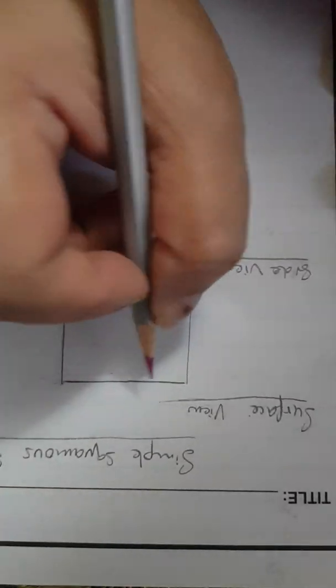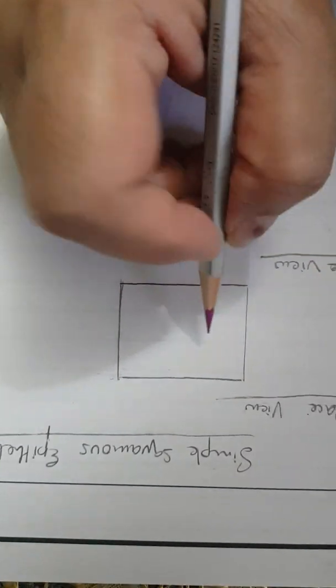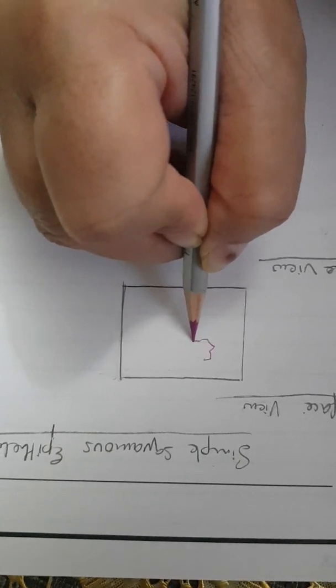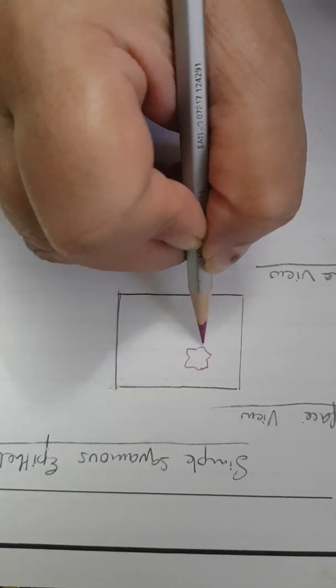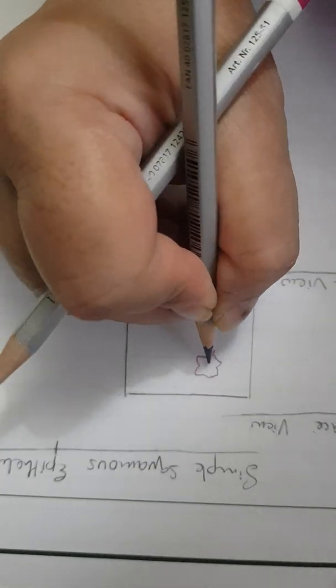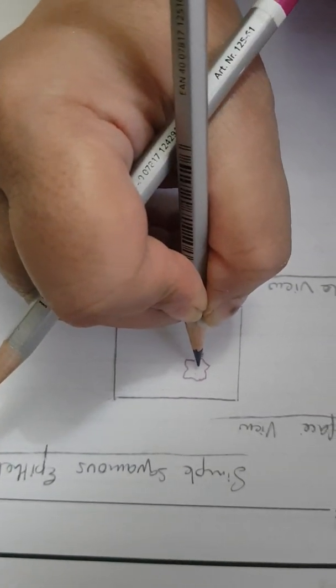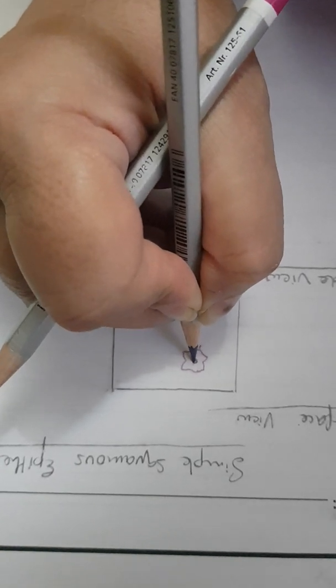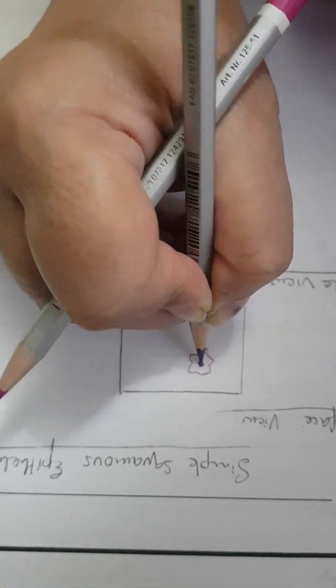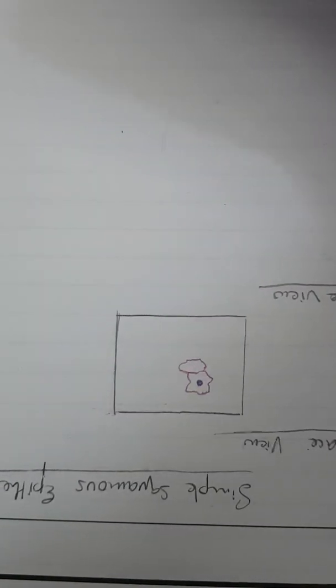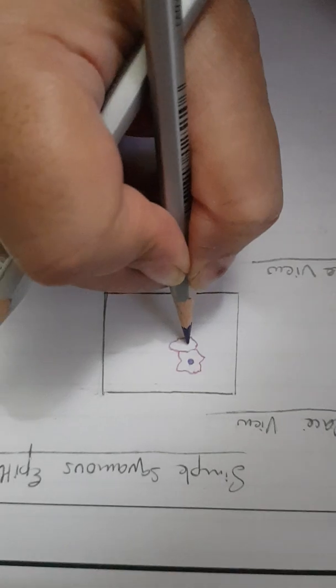For the surface view of simple squamous epithelium, you will draw polygonal cells. Polygonal cells have many sides. Each polygonal cell has a central spherical or ovoid nucleus, so you will just pick up the center of this cell and draw a spherical nucleus here, and then you can draw another polygonal cell.